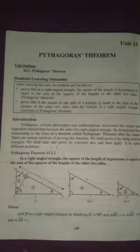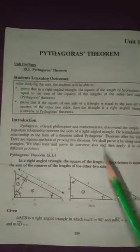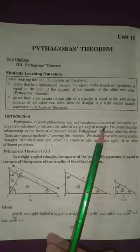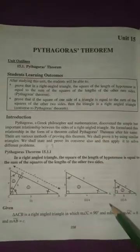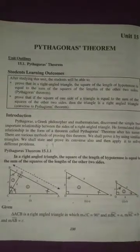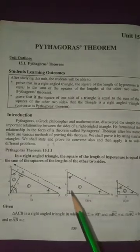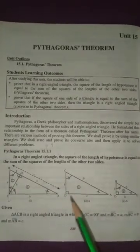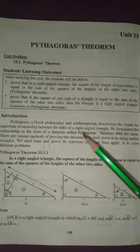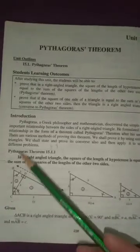Basically, Pythagoras ek Greek philosopher aur mathematician tha jisne relationship develop kiya tha between the sides of a right angle triangle — specifically ek right angle triangle jisme ek angle 90 degree ka hota hai. Uski sides ke darmiyan mein relationship develop ki, jisko uske naam se relate karke Pythagoras Theorem kaha gaya. Toh woh Pythagoras Theorem hum prove karenge.